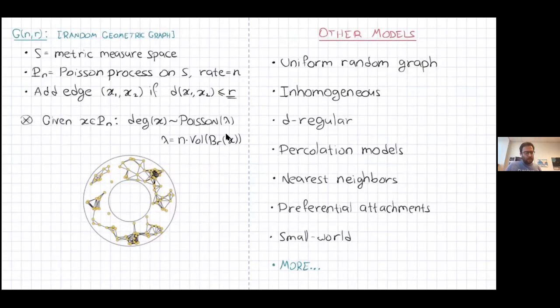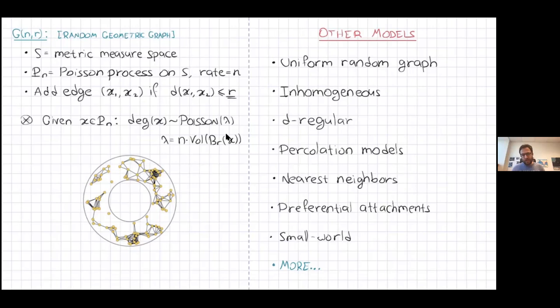There are many other random graph models that have been studied: the uniform random graph, the original Erdős–Rényi model, inhomogeneous random graphs where different edges have different probabilities, regular random graphs, percolation models, and models on a lattice. There are also more realistic models like nearest neighbors, preferential attachment, and small-world models — these try to mimic real-world networks. But often, the more realistic the model is, the harder it is to analyze. The G(n,p) is probably the nicest to work with in terms of mathematics and proofs.